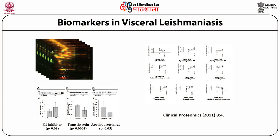Biomarkers in visceral leishmaniasis: using gel-based proteomics and differential in-gel expression, six sets of biological replicate gels were run, and a number of differentially expressed proteins were identified, including C1 inhibitor, apolipoprotein A1, retinol binding protein, transthyretin, and alpha-1 acid glycoprotein. Western blot confirmed that C1 inhibitor, transthyretin, and apolipoprotein A1 were differentially expressed between diseased samples and healthy controls. These three proteins individually or as a panel are therefore potential biomarkers for visceral leishmaniasis.